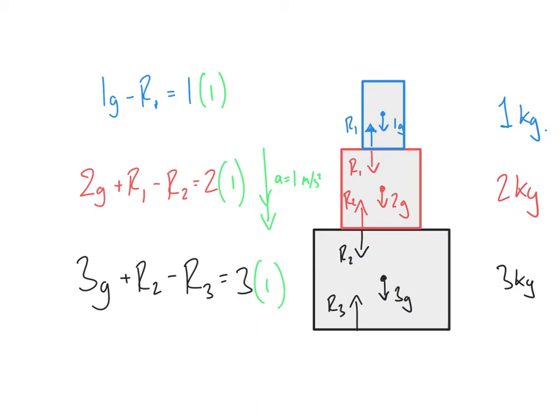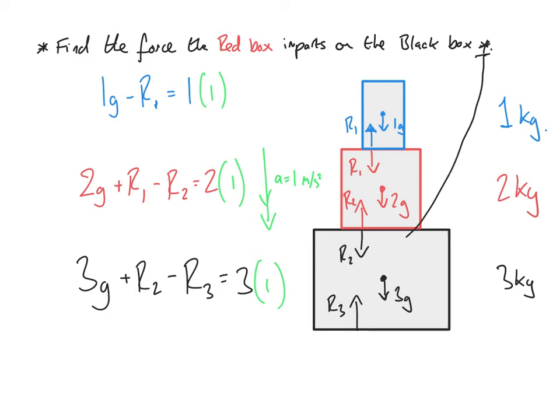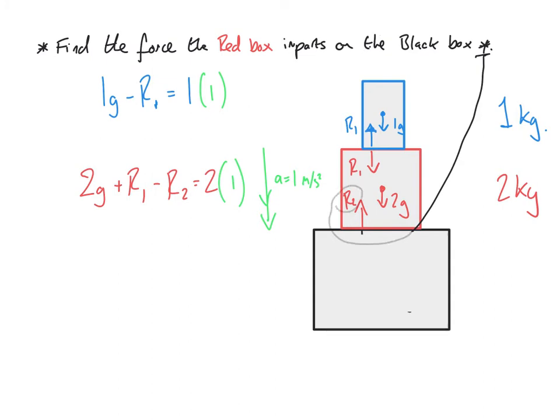Okay, so this question: find the force the red box imparts on the black box. So this is the force that the red box imparts on the black box. We're not going to find that force, though. If we find R2, we'd actually find R2 in the box above. And if we find the value of R2, we can figure out what that equal and opposite force is. So we're going to get rid of all of the information about the black box. We're not interested in it. It's not useful. But everything above that is really useful. So we're trying to find R2. The way we would do that is add our two equations.